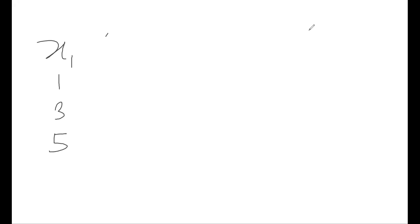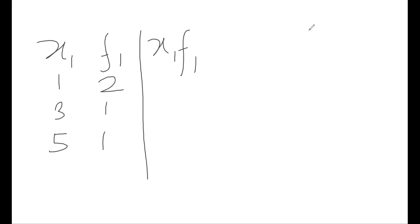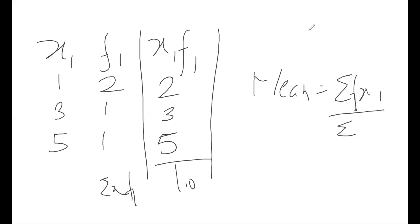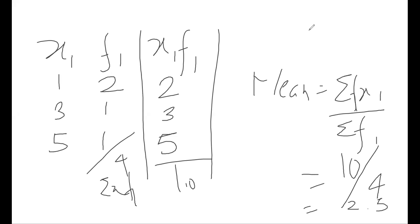There is one more formula for when we are given the frequencies of different values. If xi is 1, 3, and 5 with frequencies 2, 1, and 1 respectively, we multiply each value by its frequency: 2×1=2, 1×3=3, 1×5=5, then sum them to get 10. The mean comes out to be sigma(fi × xi) divided by the sum of frequencies, which is 10 divided by 4, giving 2.5.